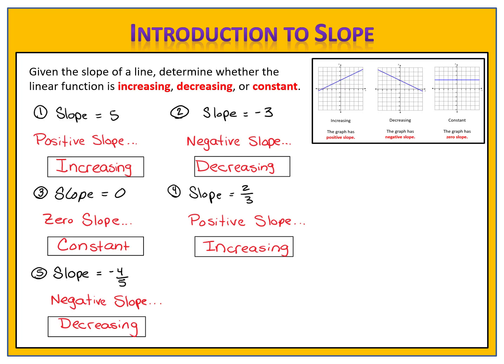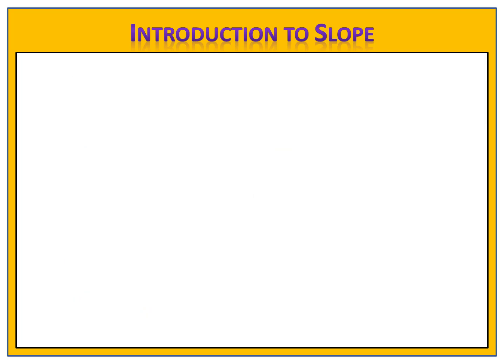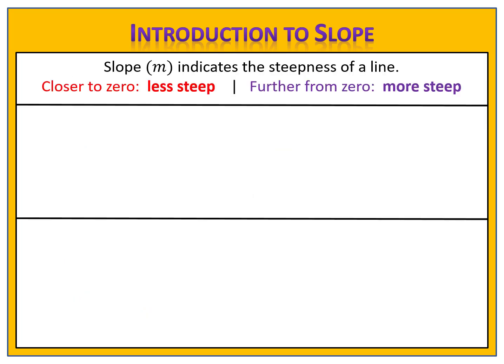Now we know how to read the slope to determine whether the function is increasing, decreasing, or constant. Let's talk about the other piece of information that slope will tell us — namely, the steepness of the line. As a general rule, the closer the slope is to zero, the less steep the line will be, and the further from zero the slope is, the more steep the line will be.